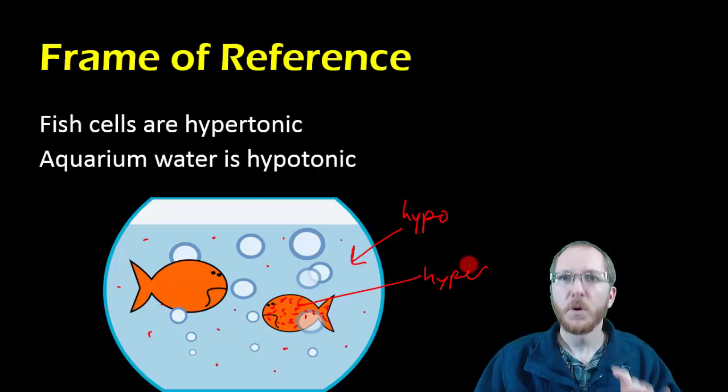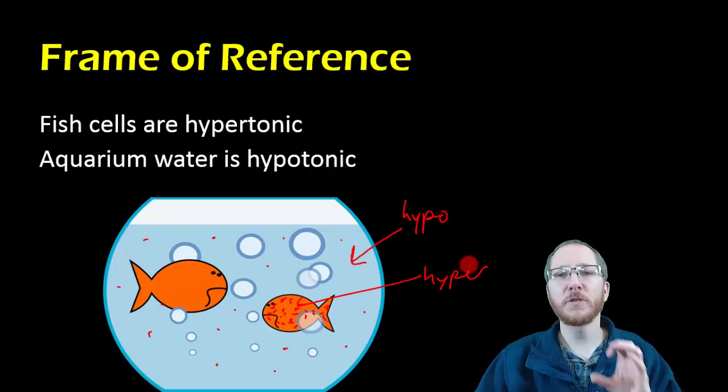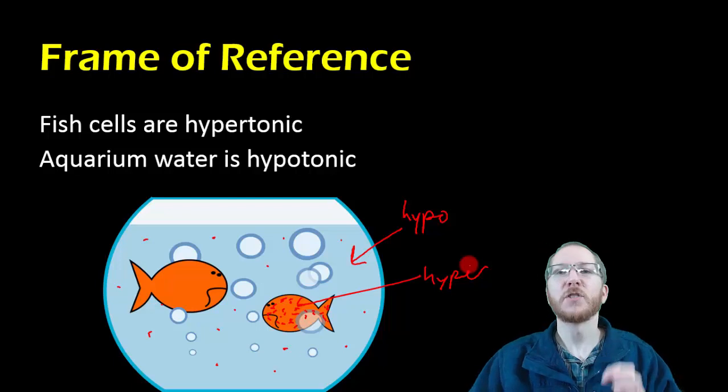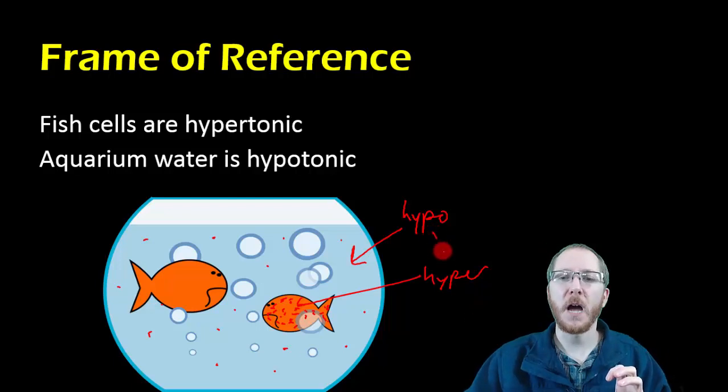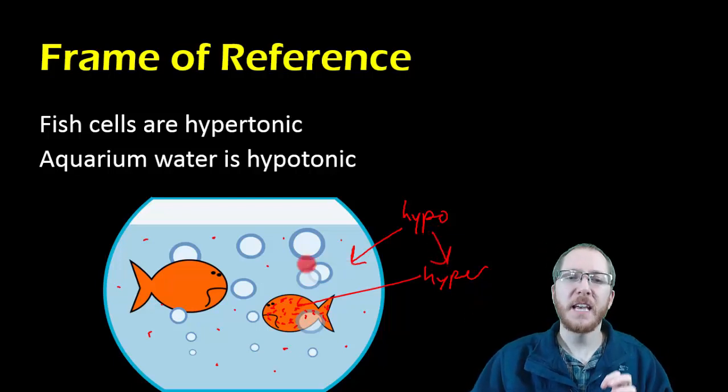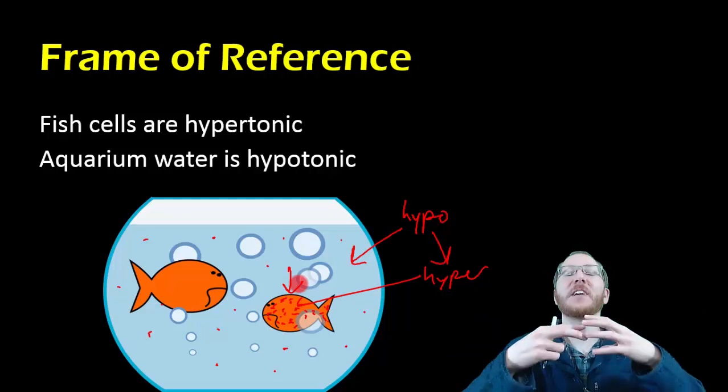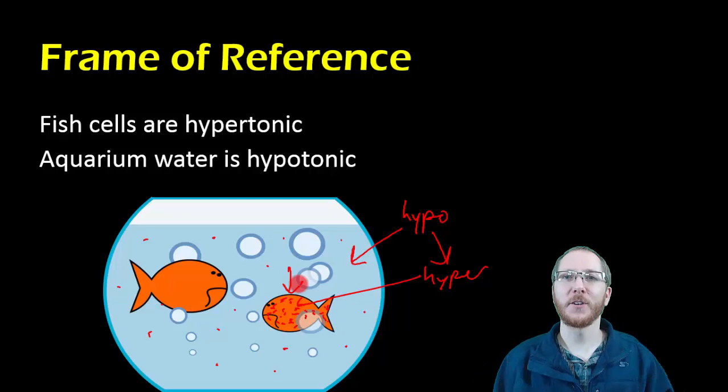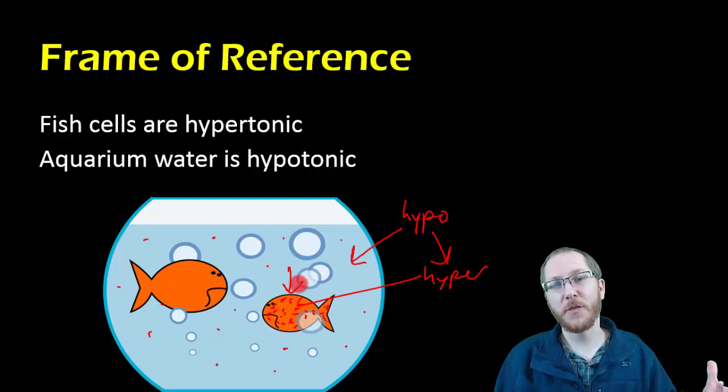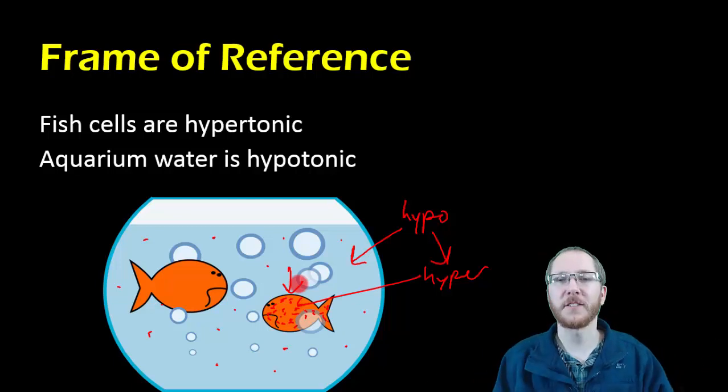And if you remember, the hypertonic guy always has more solute, and solutes suck, so we're always going to see water move from the hypo to the hyper. So in this case, we're going to see water move into the fish. And this is why freshwater fish have to urinate a lot, because they always have water coming into their body. And so they have to get rid of this water. And so one of their solutions is, I'll just go to the bathroom a lot to keep purging this water that's coming in.